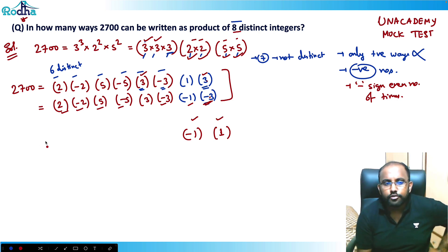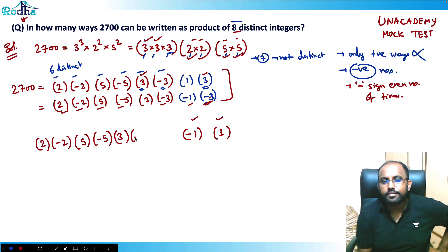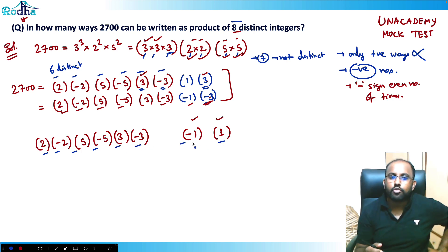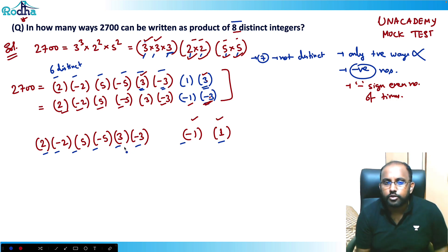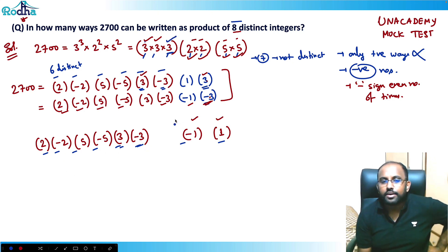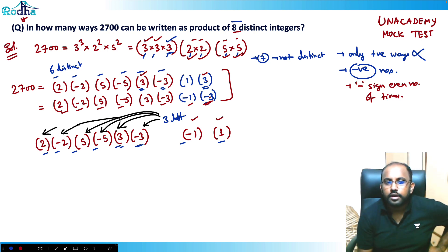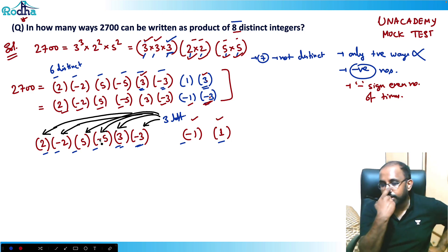So my base set is: 2, -2, 5, -5, 3, -3, 1, -1 — that's 8 numbers. But I still have one factor of 3 left over that needs to be placed somewhere. This remaining 3 can be multiplied into any one of the 6 numbers in the set. So I can multiply it in 6 ways, meaning the answer is 6.